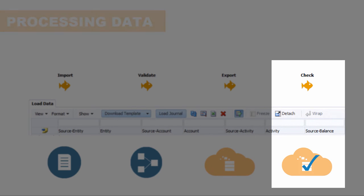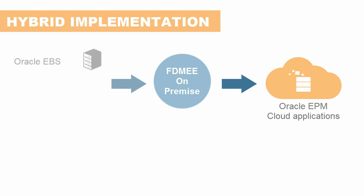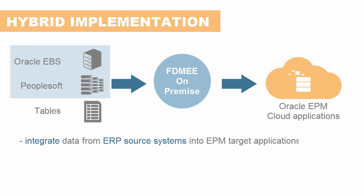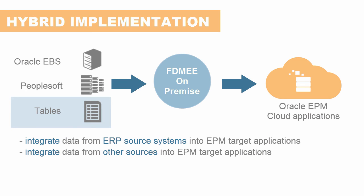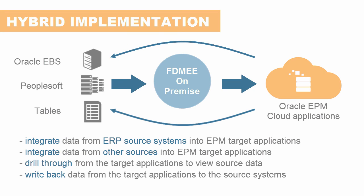A hybrid approach is also possible, combining on-premise FDMEE and Oracle EPM Cloud applications, including Profitability and Cost Management. FDMEE provides integration adapters for multiple source systems, such as eBusiness Suite, PeopleSoft Financials, or generic tables and views. This approach enables you to integrate data from ERP source systems into EPM target applications, integrate data from open interface tables, text, and Excel into EPM target applications, and drill through from an EPM target application to view data in the ERP source system.